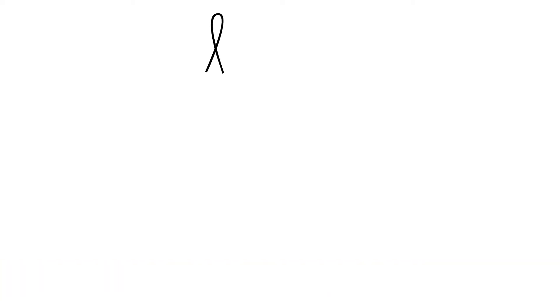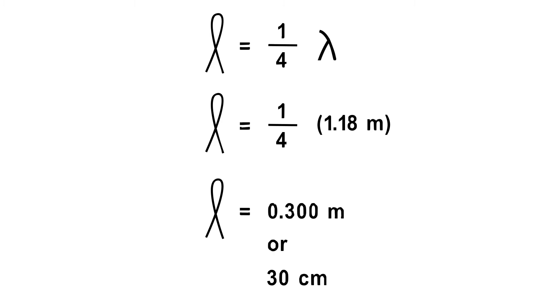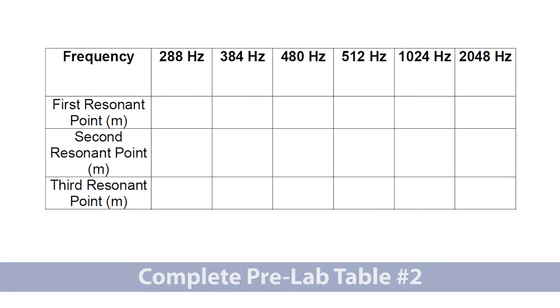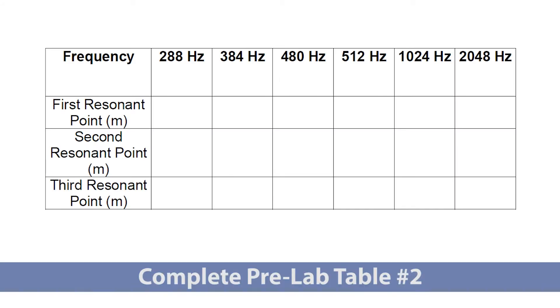For each wavelength, calculate the approximate length of column that would produce the first four resonant points. For the 288 hertz tuning fork, this means you should find the first resonant point at approximately 0.30 meters or 30 centimeters. Find the other three lengths using 3 quarter lambda, 5 quarter lambda, and 7 quarter lambda. Pause the video and complete the second pre-lab table and answer the pre-lab questions.